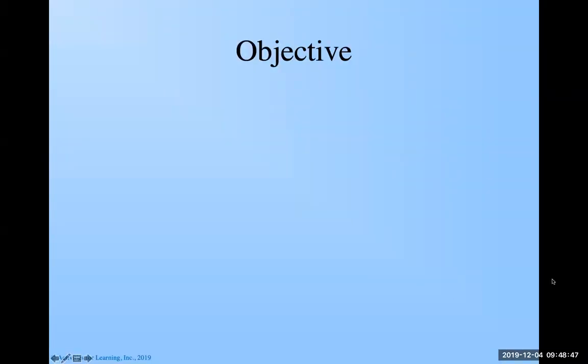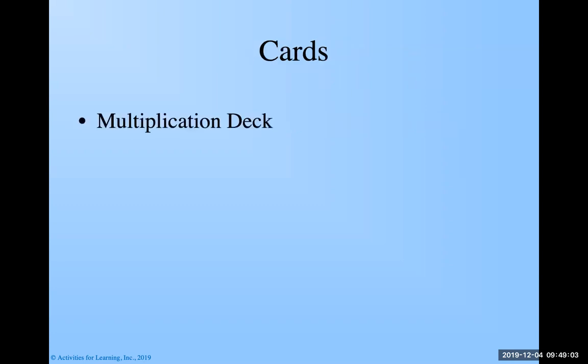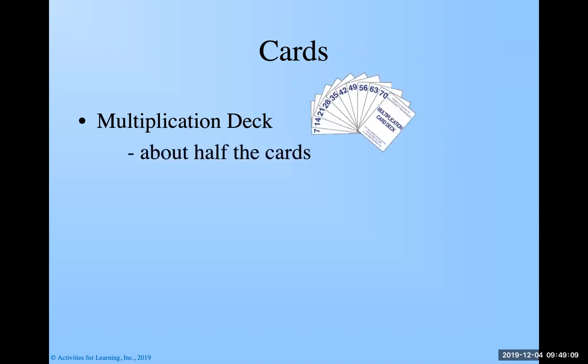Okay, so let's look at this in detail here. We have the objective. We're going to practice using the multiplication facts. So this is a great game for people who say, my kids don't know their multiplication facts. Play this game. The cards that we need, and again, this is all from the book, we need the multiplication deck, which looks like this. And it tells us we need about half the cards. So we're not going to use the full deck, just a random half. If you want to use the full deck, that's fine. It's going to be a longer game, but it says to use half the deck.